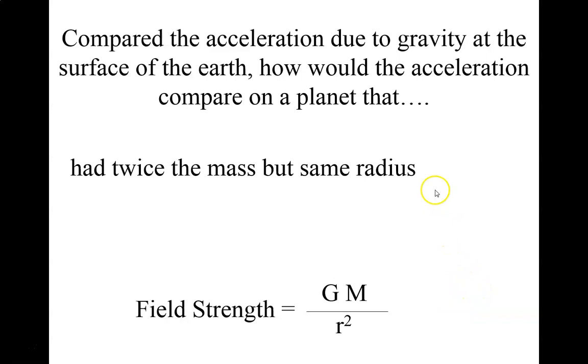Compared to the acceleration due to gravity at the surface of the Earth, how would the acceleration compare on a planet that had twice the mass but the same radius? So this is the equation that we're using. Well, if we double the mass of the Earth, or whatever planet we're talking about, we're going to have twice the field strength. We're going to have twice the acceleration. So rather than 9.8 meters per second squared on the planet Earth, the acceleration on that planet would be 19.6 meters per second squared. It'd be a very different place.